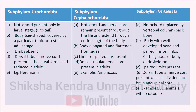The second subphylum is Cephalochordata. Notochord and nerve cord remain present throughout life and extend through the entire length of the body. The body is elongated and flattened from the sides. Limbs or paired fins are present. They have a dorsal tubular nerve cord in the adult form. Example: Amphioxus.